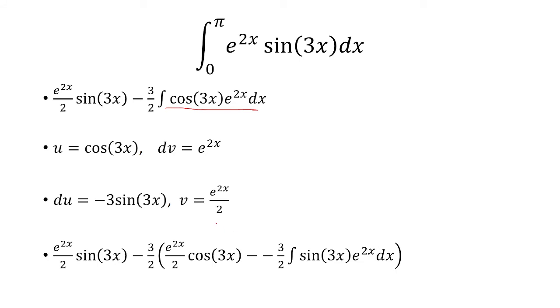So now what we do is multiply u with v to get e to the 2x over 2 cosine 3x, and then minus integral v du, which is this part right here.